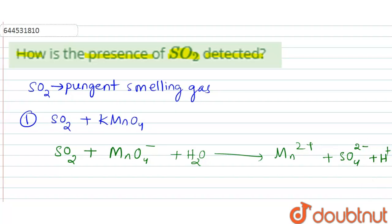Let's balance this reaction. It will be 5 SO₂ giving 5 SO₄²⁻, and 2 MnO₄⁻ giving 2 Mn²⁺, with 4 H⁺ and 2 H₂O.